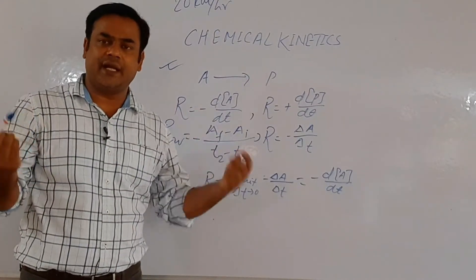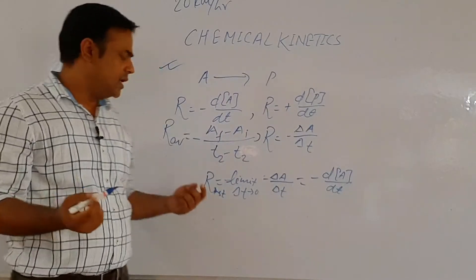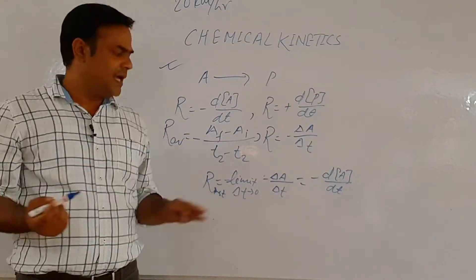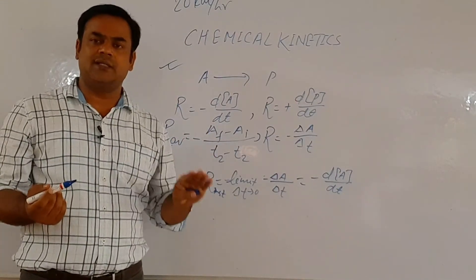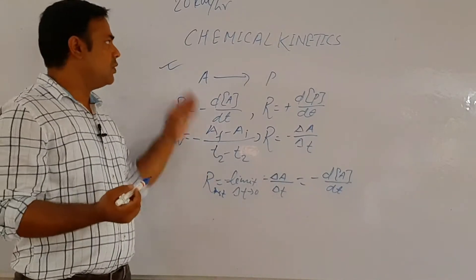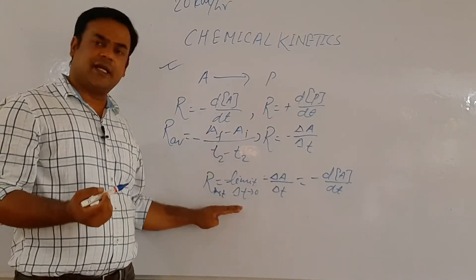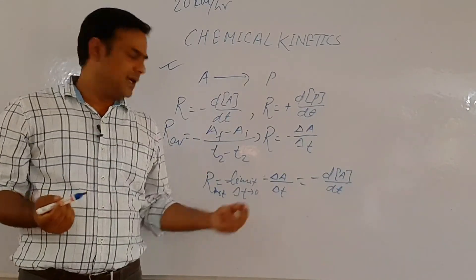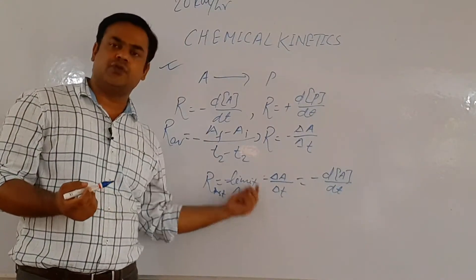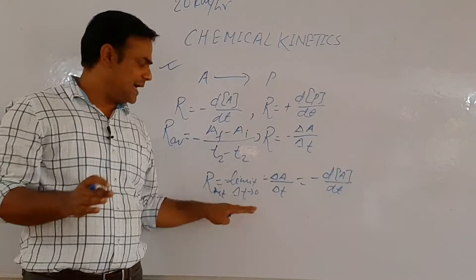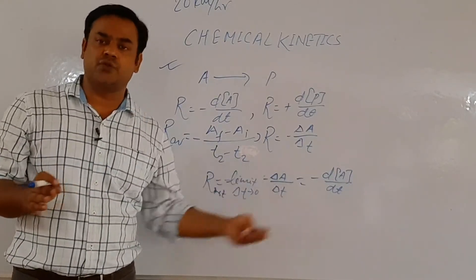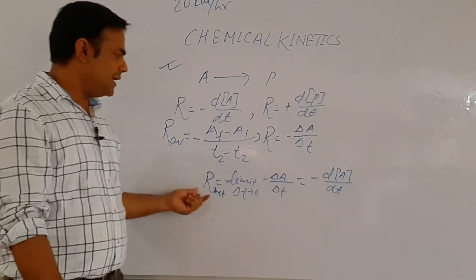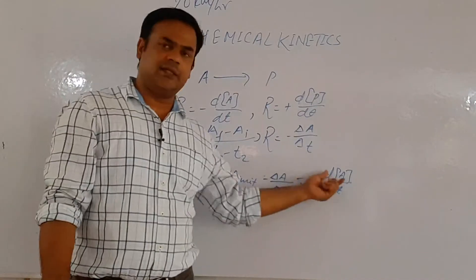For instantaneous speed, ΔT becomes tends to 0 — the time interval becomes very, very small. Whatever we calculate at that point is called instantaneous speed. Similarly, there is instantaneous rate of reaction, and for instantaneous rate ΔT must be very small, written in terms of limit tending to 0. We should not infer that ΔT equals 0; it only tends to 0, meaning the time interval is very, very small. At that point we write rate equals minus dA/dt.